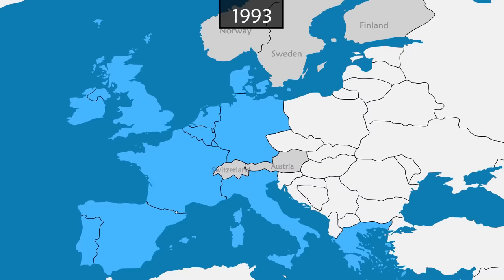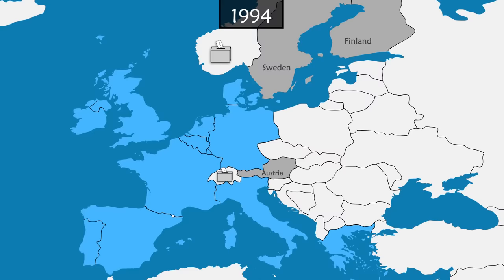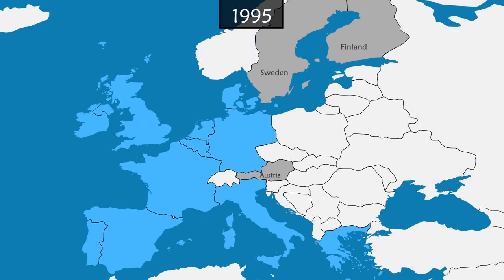A new wave of countries request membership to the Union. But Switzerland and then Norway oppose potential candidacy via referendums. On the other hand, in Austria, Sweden and Finland, negotiations succeed and in 1995, the EU grows to 15 members.